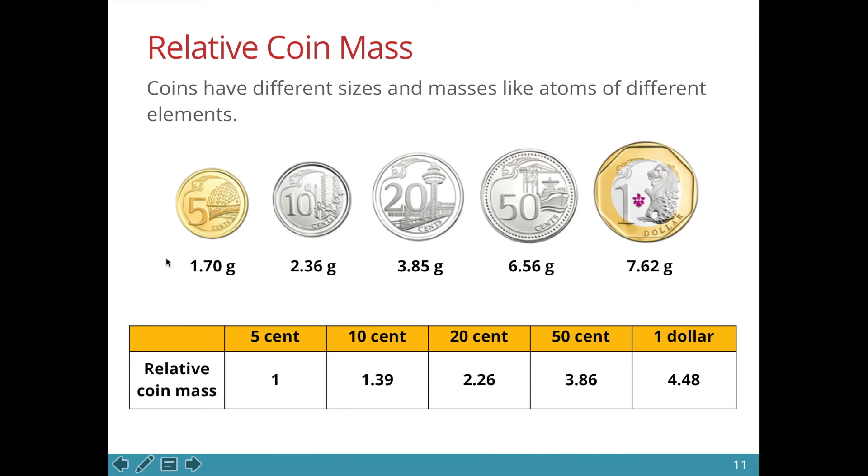In other words we give this one unit. Since the 10 cent coin weighs 2.36 grams, we say that it is 1.39 times heavier than the 5 cent coin. Likewise we can say that the one dollar coin is 4.48 times heavier than the 5 cent coin. So this is what it means by a relative mass. We are comparing all the masses to the same thing which is the 5 cent coin.